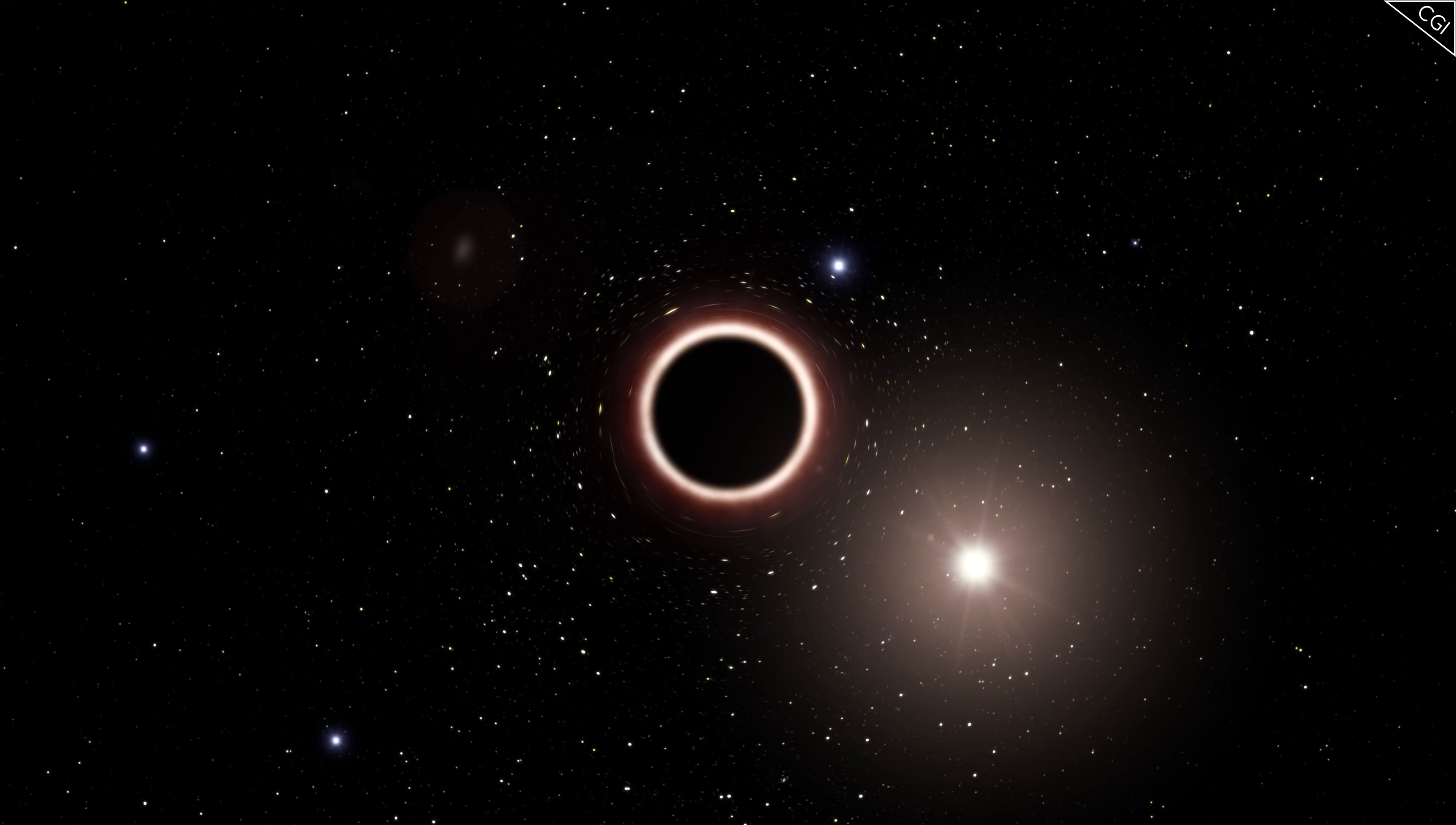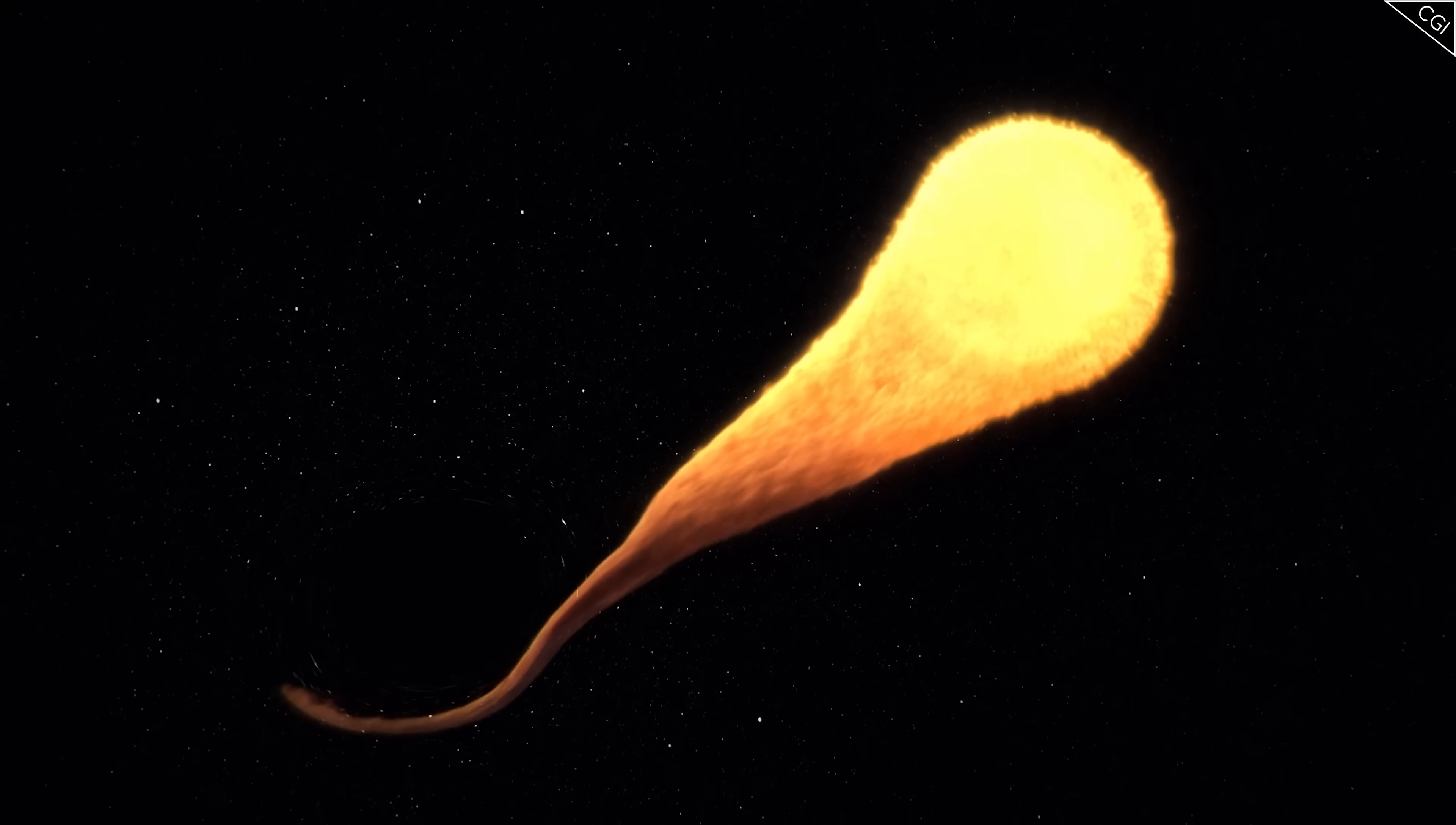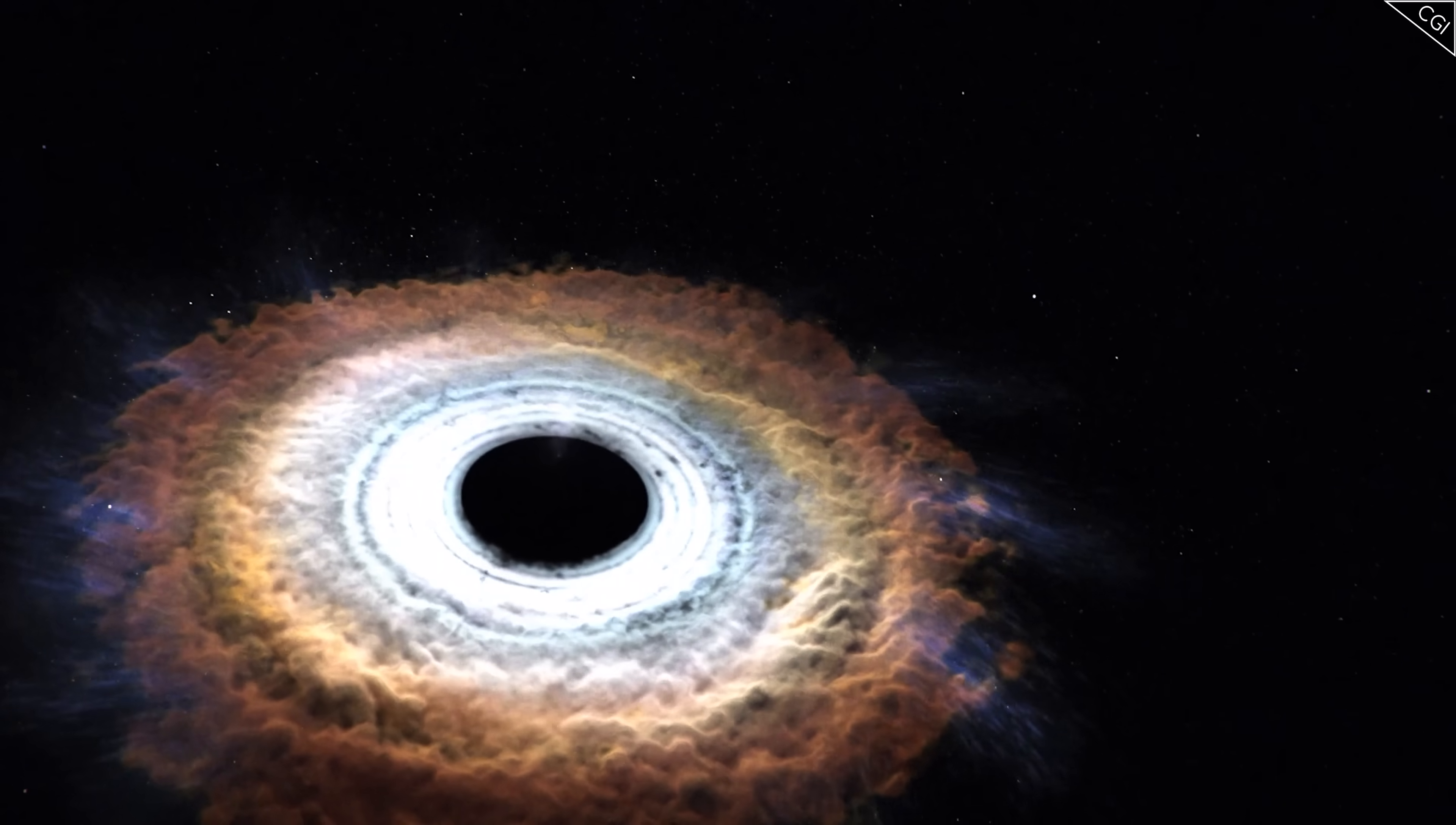In most scenarios, matter does not fall in a perfectly straight line towards a black hole. Almost always it will miss it slightly and will start spiralling in towards its centre as it's caught in the black hole's gravity. It now has angular momentum.